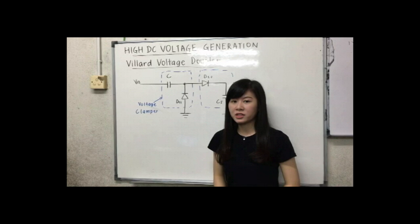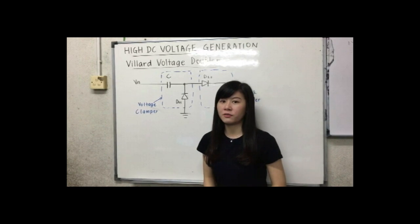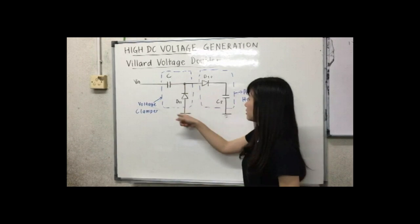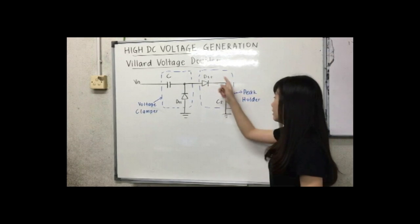Then comes the Villard voltage doubler. It consists of combination of voltage clamper at this part and the peak holder at this part.